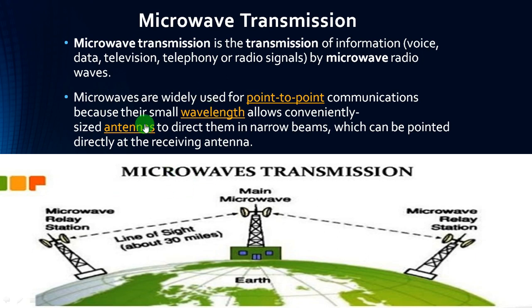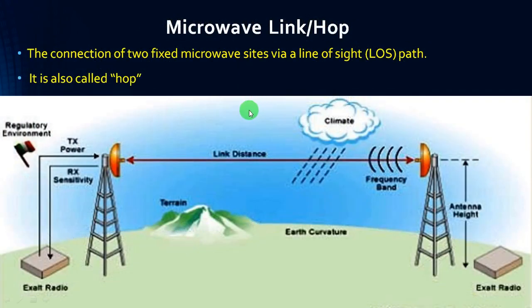Let's suppose this is a main hub site. It contains two microwave links going in two directions. Without obstacles between two antennas, this is called line of sight, and it supports approximately 30 miles. The connection of two fixed microwave sites via line of sight is called a microwave link or hub.